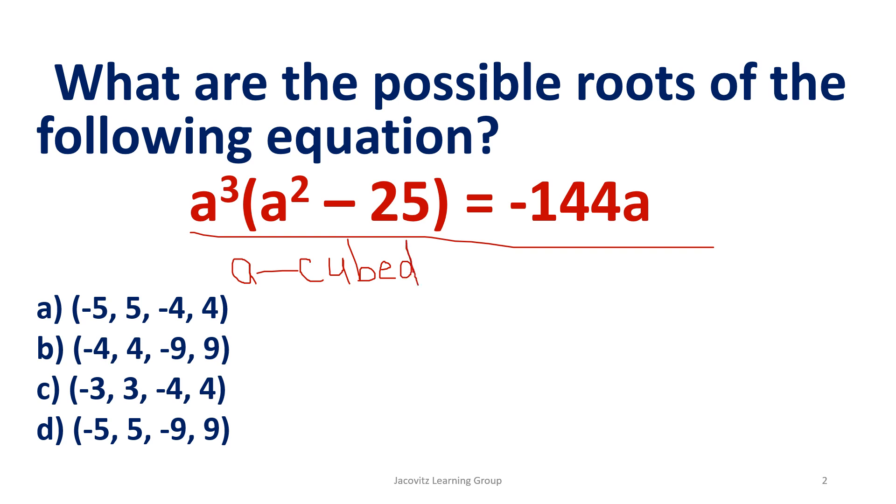We're going to remember that you use the distributive property. And that means this A to the third power has to go to each power in this term. It can go on this term after we get this negative 144A over to the other side.